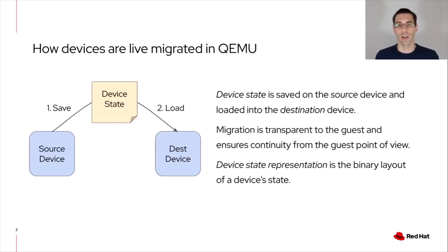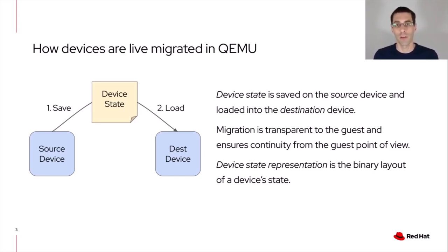How are devices migrated in QEMU today? QEMU migration works by saving the device's state on the source and then transferring the state to the destination, where it's loaded into the destination device and can resume execution. This is transparent to the guest, so the guest driver and applications are not interrupted by this process, and anything that's happening will continue seamlessly. The device state itself has a serialized binary form called the device state representation.